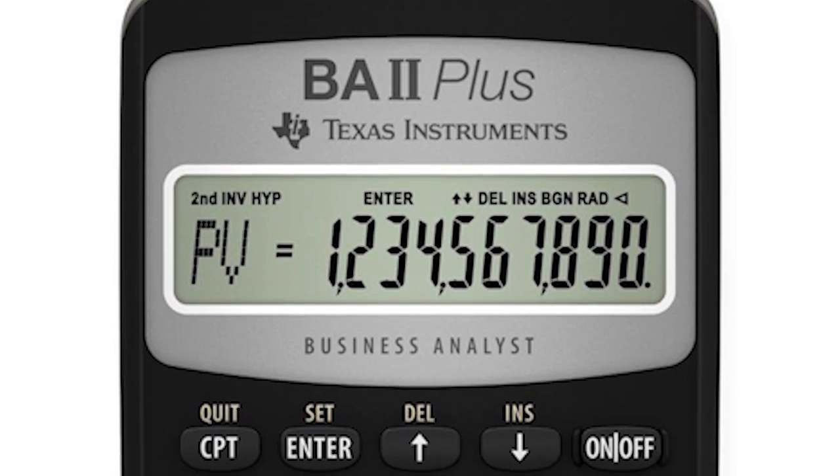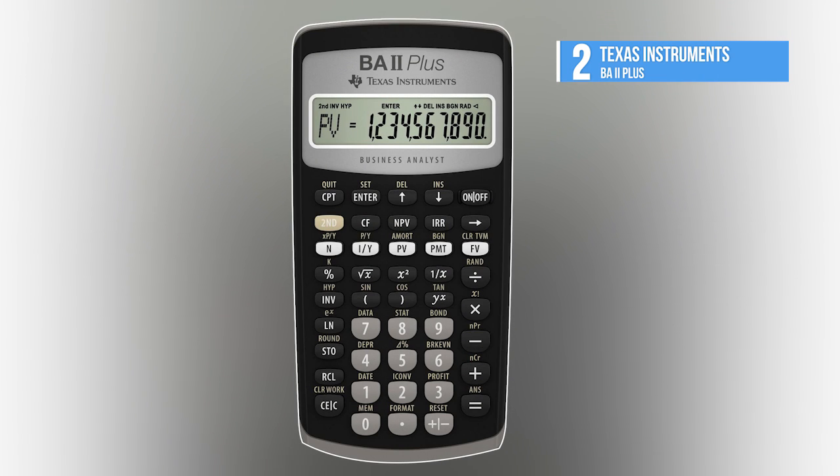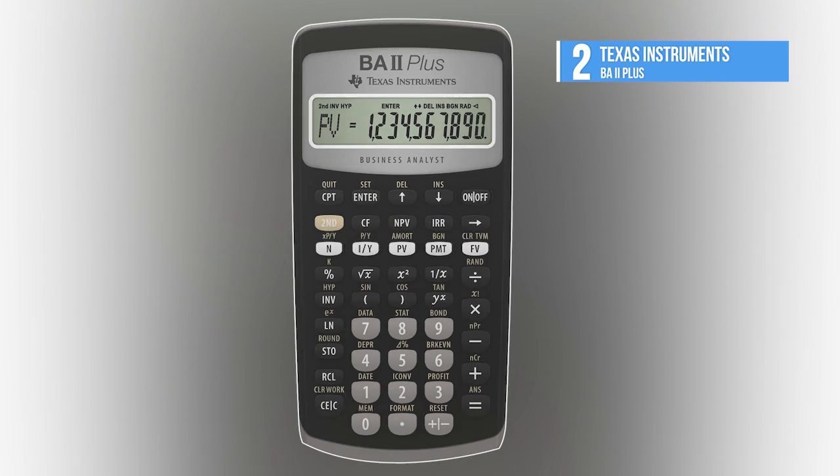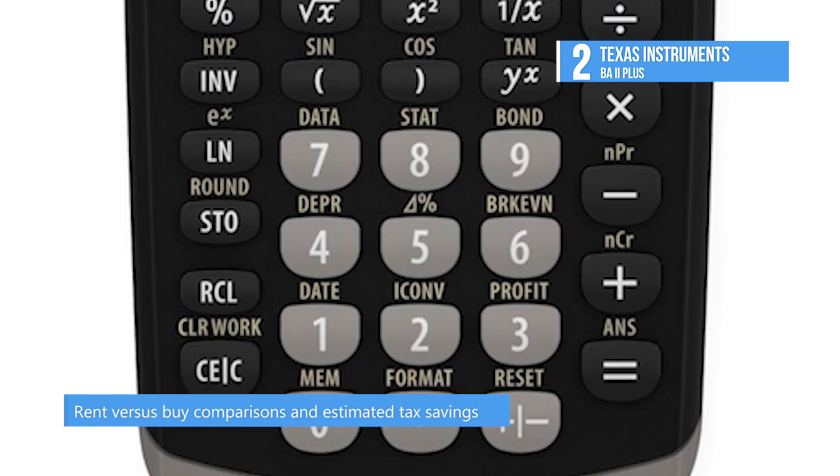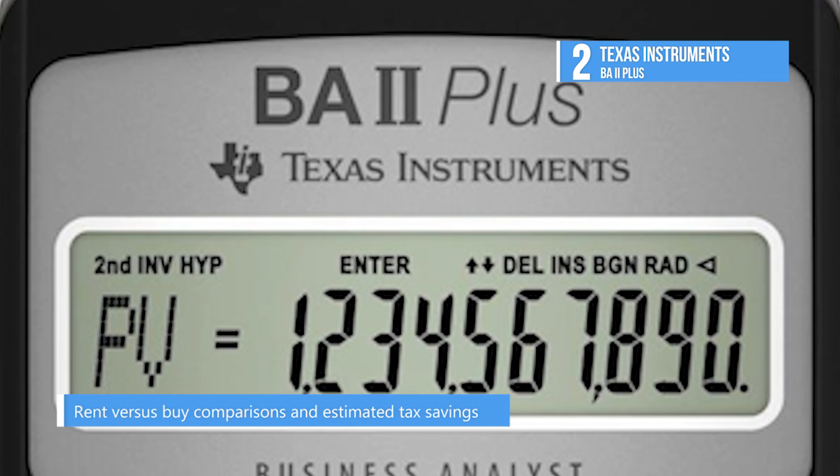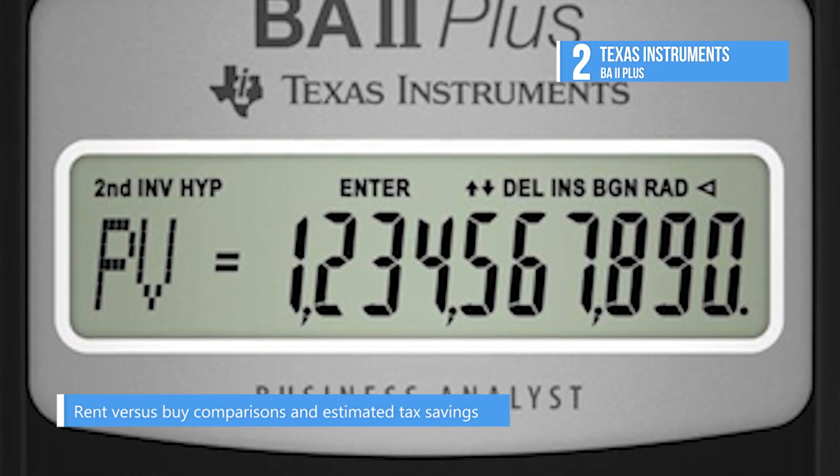Our runner-up today, second best product is the Texas Instruments BA2 Plus. Texas Instruments BA2 Plus Financial Calculator for business professionals and students features the ability to perform common math as well as various financial functions.